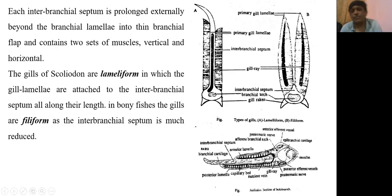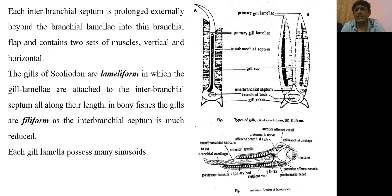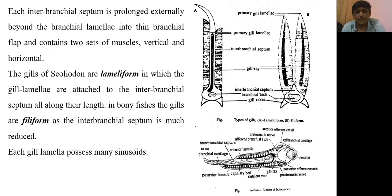Lameliform gills are found in cartilaginous species, and filiform gills are found in bony fishes. Each gill lamella possesses many sinusoids internally, where blood circulation is maintained, as it contains blood vessels and nerves.